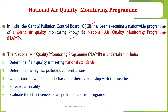The first objective of NAMP is to determine if air quality is meeting national standards. NAMP assesses whether the ambient air quality in various locations across India meets the national air quality standards set by the government. These standards define the acceptable concentration limits for various pollutants to ensure public health and environmental protection.